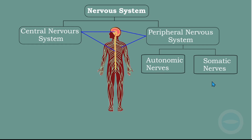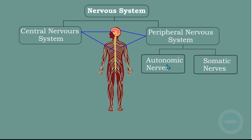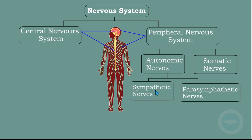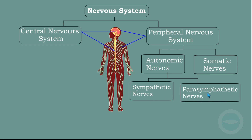Somatic nerves govern actions that happen consciously — like if I walk, I walk consciously; this is for somatic nerves. The autonomic system is further divided into two: we have the sympathetic system and the parasympathetic nerves. Sympathetic nerves prepare the body for a stressful or emergency situation — if there is an emergency, the sympathetic nerves kick in and take action. Parasympathetic nerves then bring things back to normal.